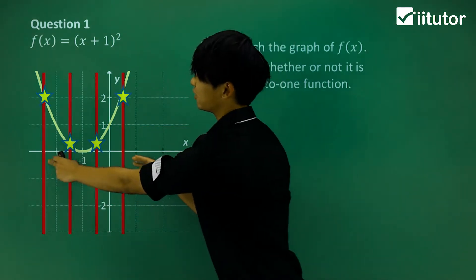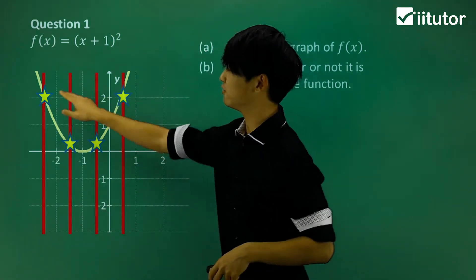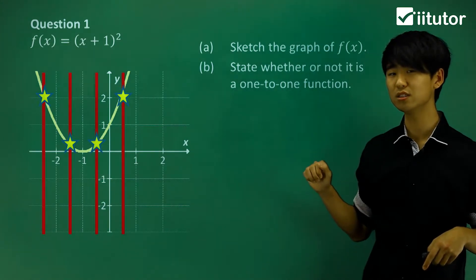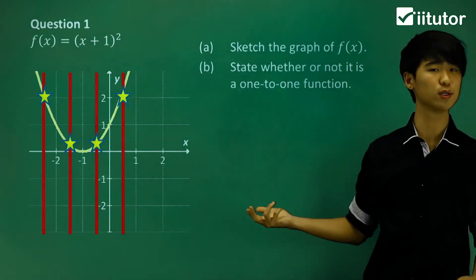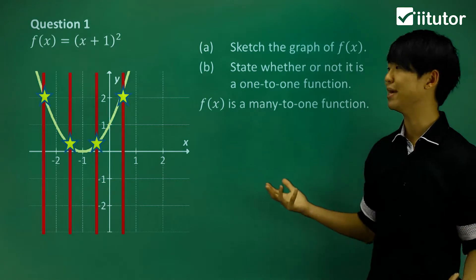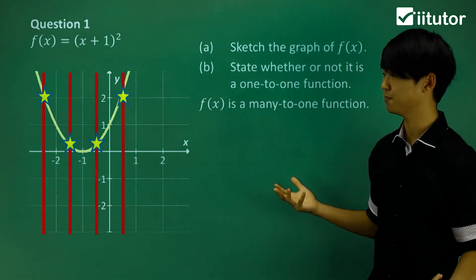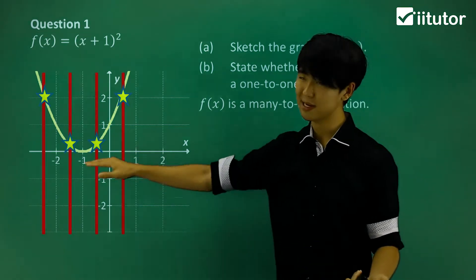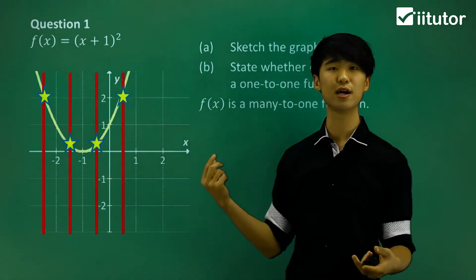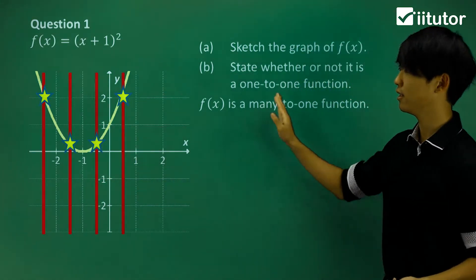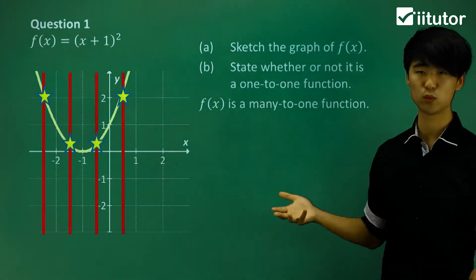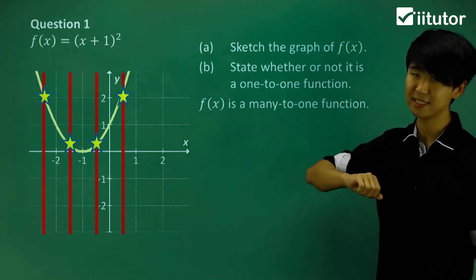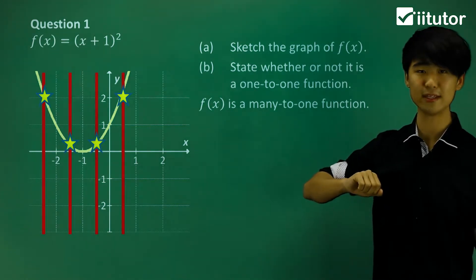I have an x value on one side and an x value on the other side that both give me the same y value. So this function is not a one-to-one function — it's a many-to-one function. Many x values map to that one y value. Many-to-one means multiple x values to one y value, while one-to-one means just one x value to one y value.